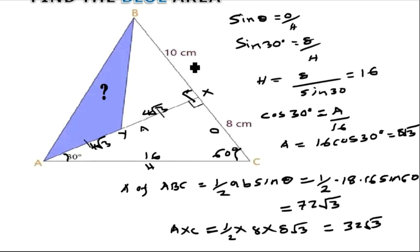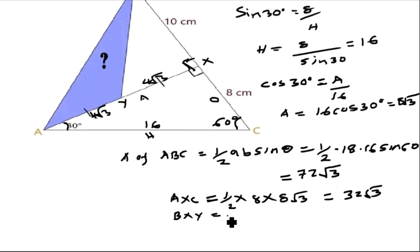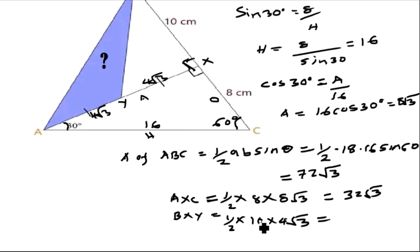Now, what is the area of triangle BXY? Triangle BXY is also a right-angled triangle at X, because angles on a straight line add up to 180°. So its area is ½ × base × height. The base from X to B is 10, and the height XY is 4√3. So the area is ½ × 10 × 4√3 = 20√3.